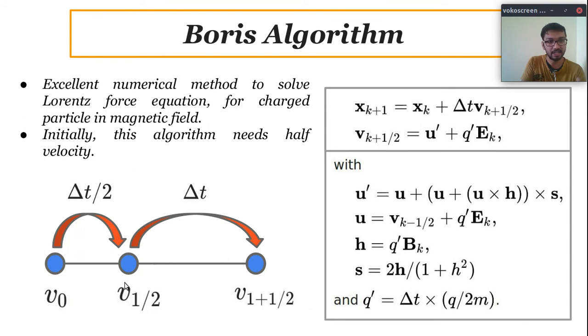So, after calculating this half velocity, what we will do is, we will switch to delta t and it will calculate v3/2, v5/2, and simulation will go on.